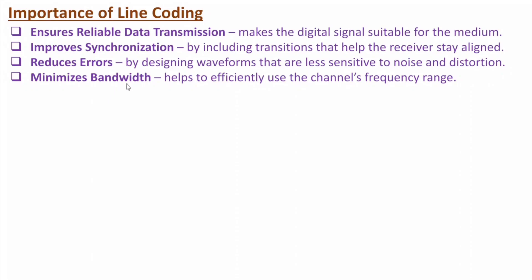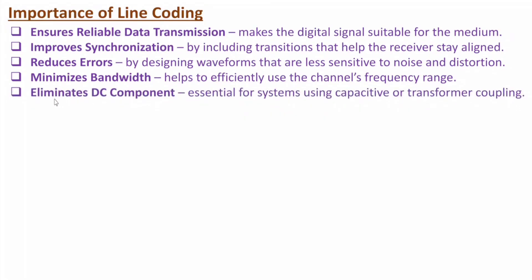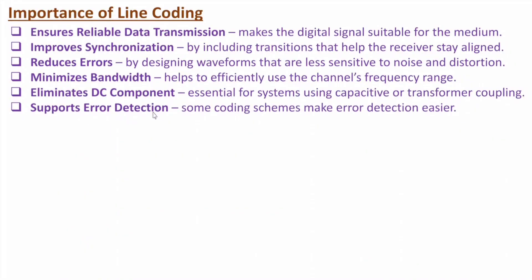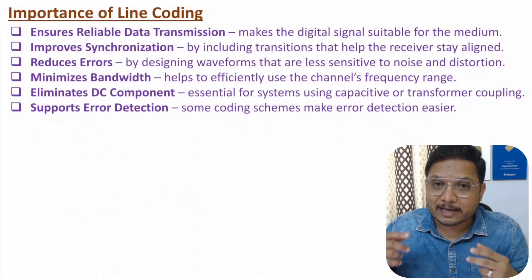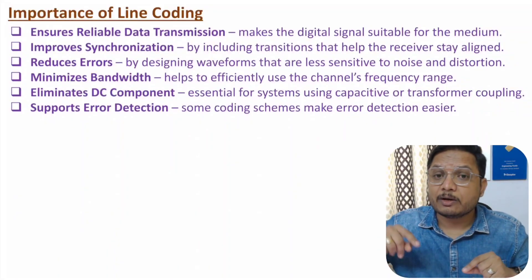Line coding also helps with bandwidth — using digital signals properly can minimize bandwidth and allow efficient data transmission. Line coding eliminates DC component; for example, Manchester encoding has zero DC component, avoiding issues with transformer coupling. Line coding also supports error detection — in some line coding schemes one can detect errors.